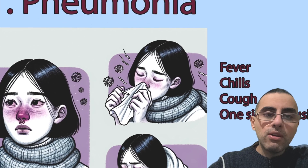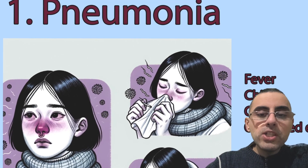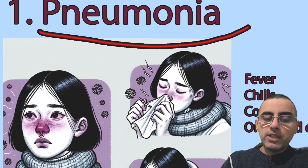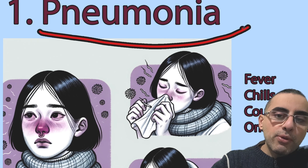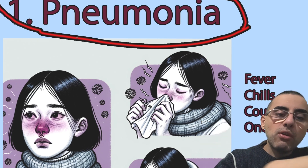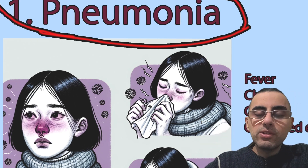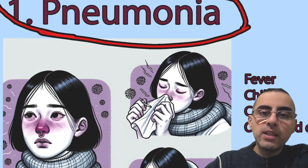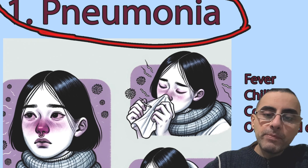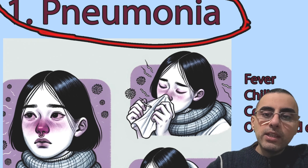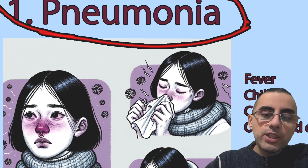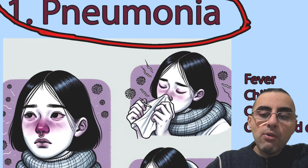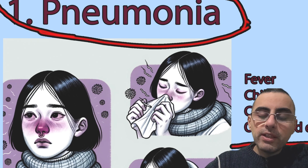The first and most common cause is pneumonia, especially among young adults. If a young adult has pleural effusion, with high probability it is because of pneumonia. The person will say they had a cold or flu, and they have symptoms like fever, chills, cough, and one-sided pleural effusion.